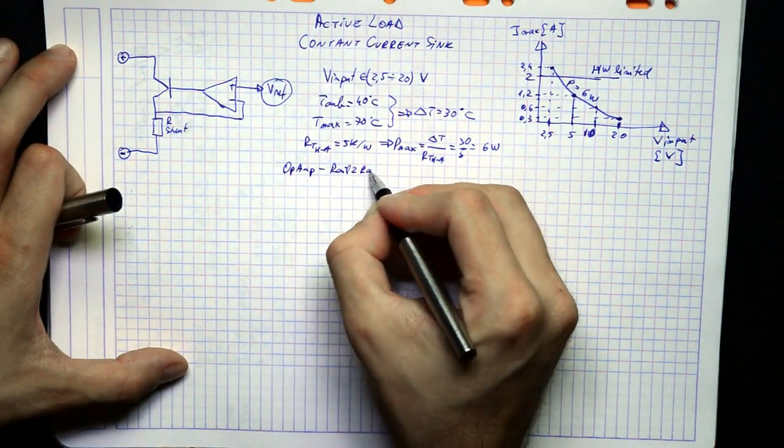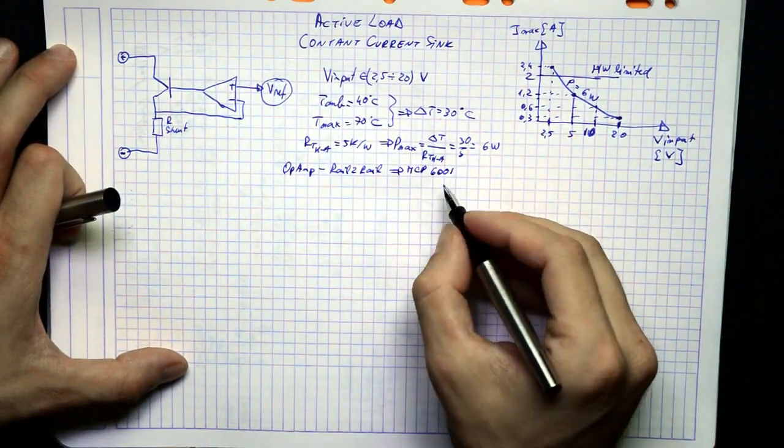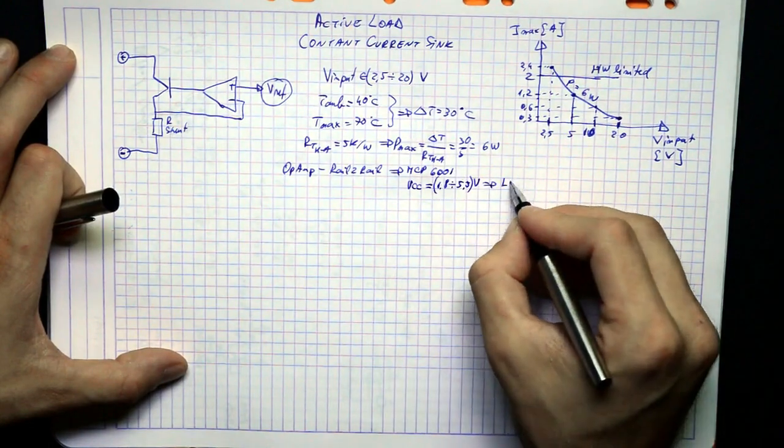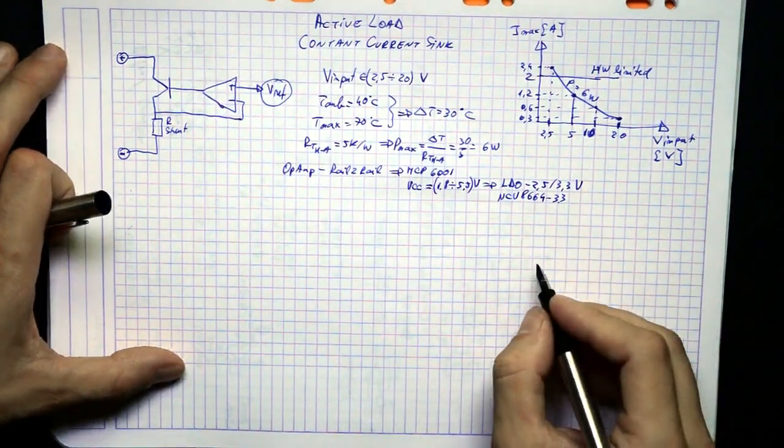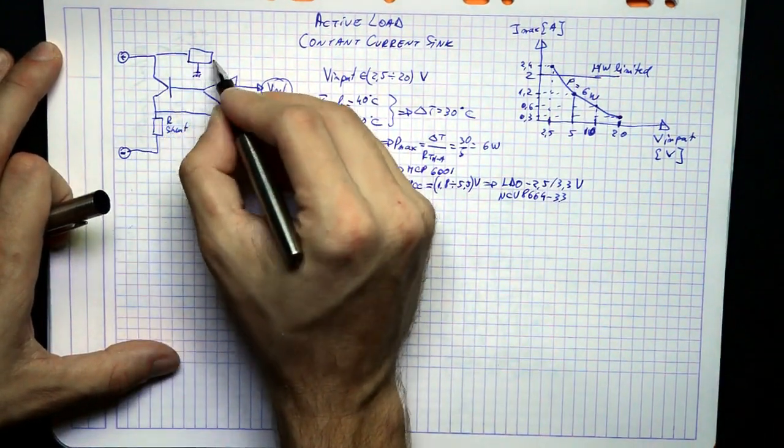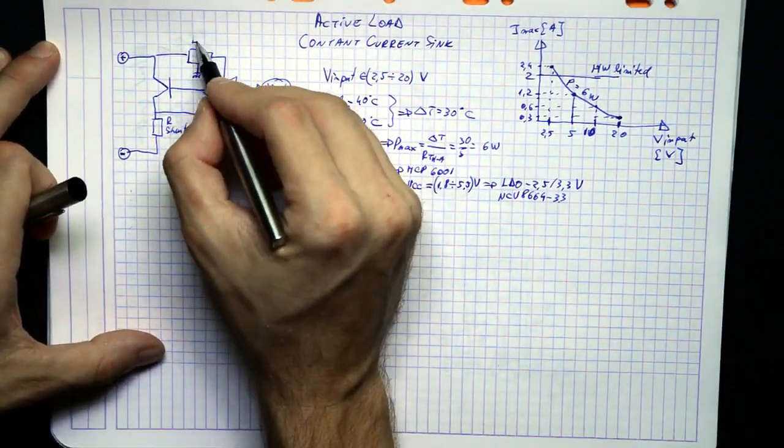The op amp needs to run at very low voltages, so a rail-to-rail type is needed. I will go for the MCP6001 single op amp. And since its maximum operating voltage is 5.5 volts, I will also need a 2.5 or 3.3 volt LDO.